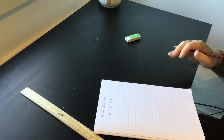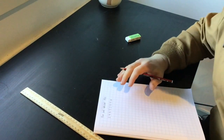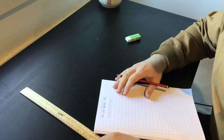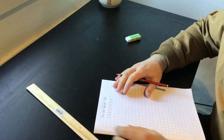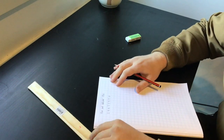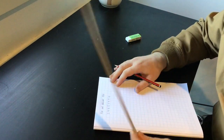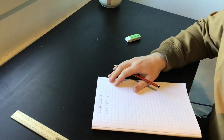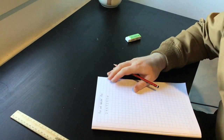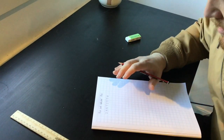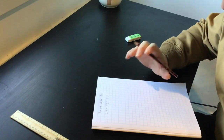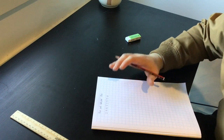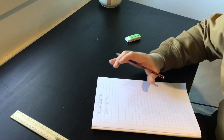We're going to be looking at box and whisker plots today. You will need a ruler to complete these because they do need to be nice and precise and straight.